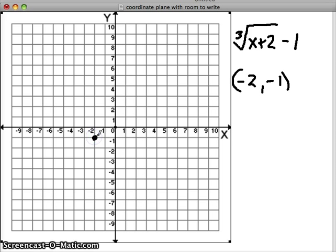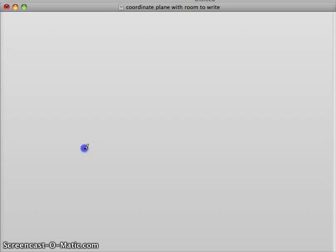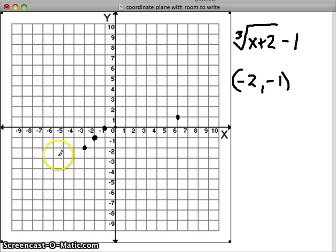And the shortcut to graph our cube roots is go up 1 over 1, up 1 over 7. And work backwards. Do the opposite. Down 1, left 1. And down 1, left 7. Alright, so there is our cube root graph.